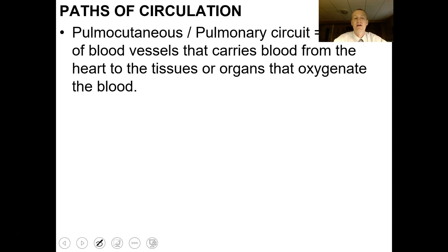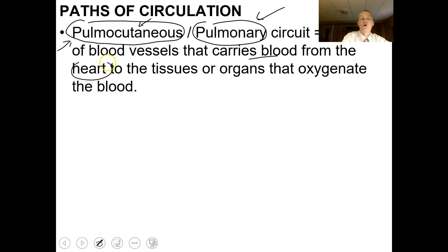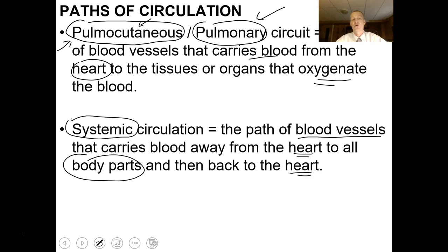There are different paths of circulation. One is the pulmonary — or pulmonary-cutaneous — circuit. Pulmonary refers to the lung, cutaneous refers to the skin. Some organisms use their skin for gas exchange. This is the path of blood vessels that carries blood from the heart to the tissues or organs that oxygenate the blood. The second path is the systemic circuit — blood vessels that carry blood from the heart to all the body parts and back to the heart.